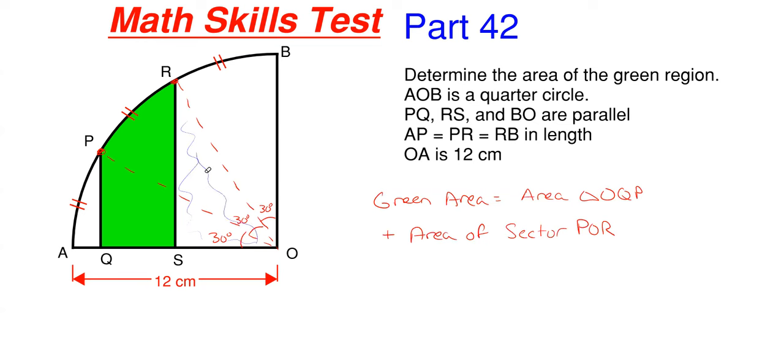I need to subtract that portion out from my two triangles to get what's in green. So let's subtract out the area of that right triangle which is OSR and that's what I would get in green. So let's start working on this.